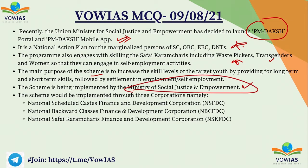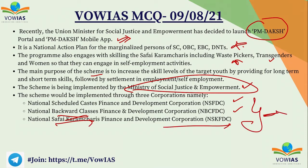The scheme is implemented through three corporations: the National Schedule Caste Finance and Development Corporation, the National Backward Classes Finance and Development Corporation, and the National Safai Karmachari Finance and Development Corporation. All three combinedly implement this scheme.